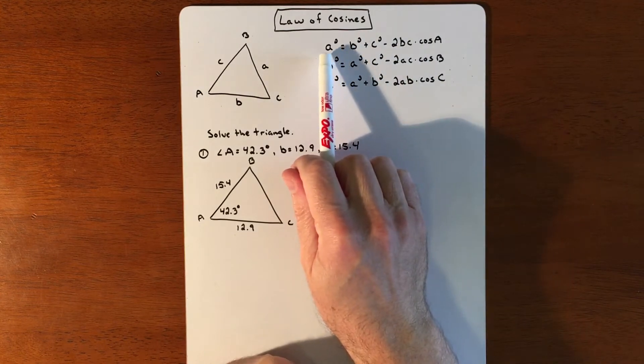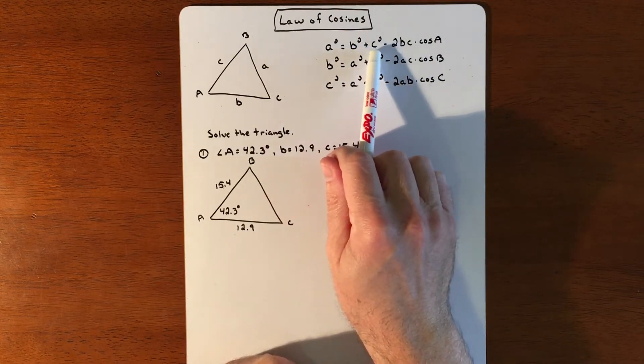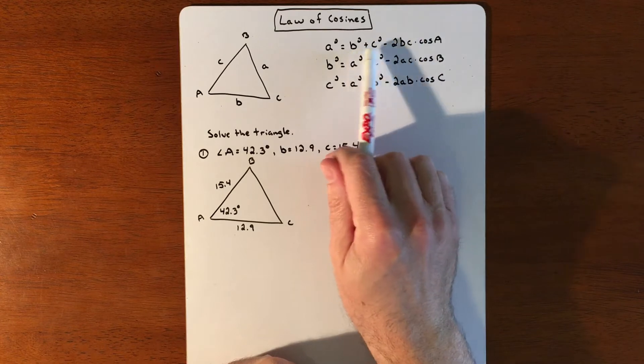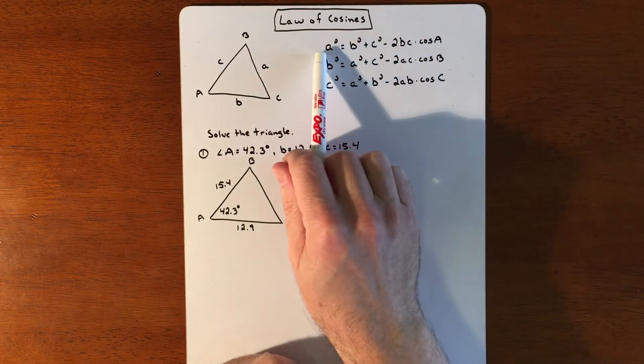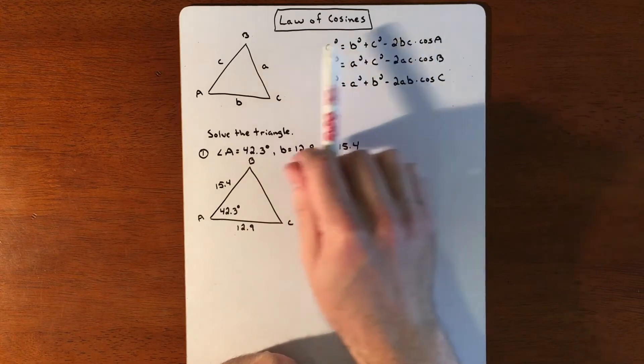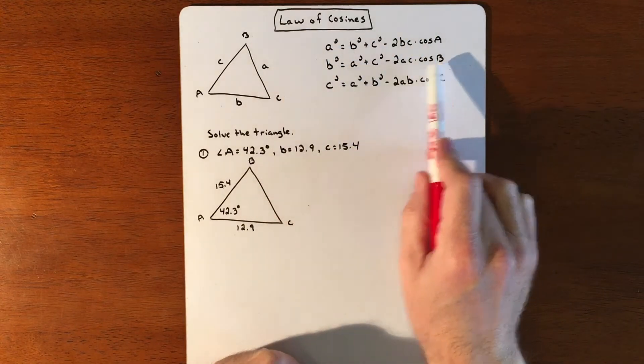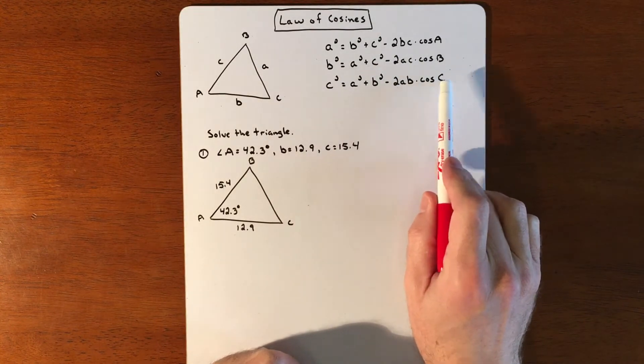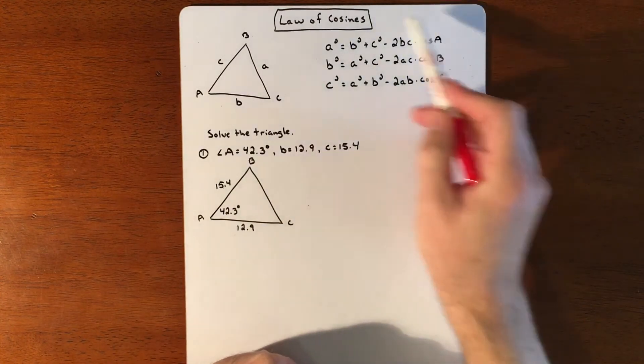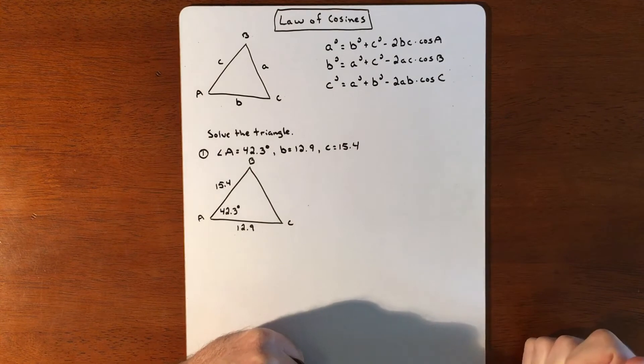Basically, a squared equals b squared plus c squared minus 2bc times cosine of the angle that you started with, the angle across from the side. You'll notice that if this is b squared, that's cosine of b. If that's c squared, it's cosine of c. This is your formula. You're going to use one of these in order to use Law of Cosines.